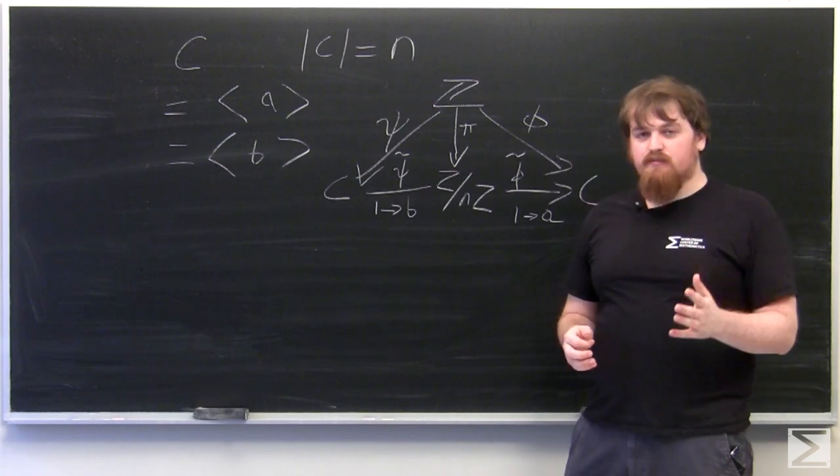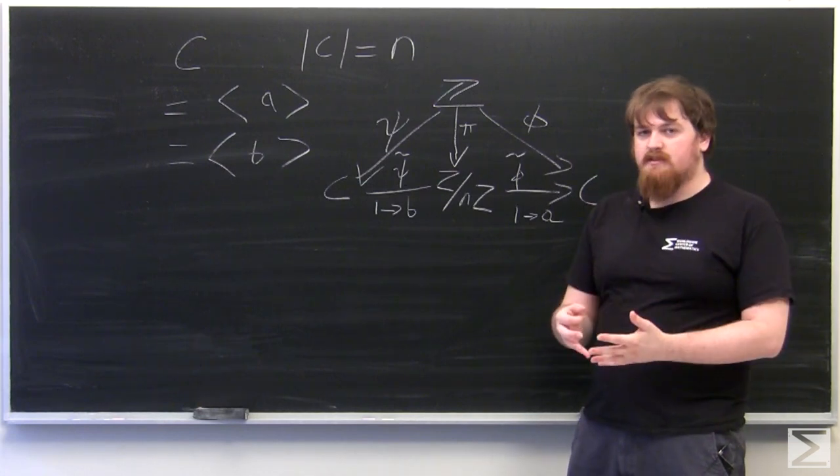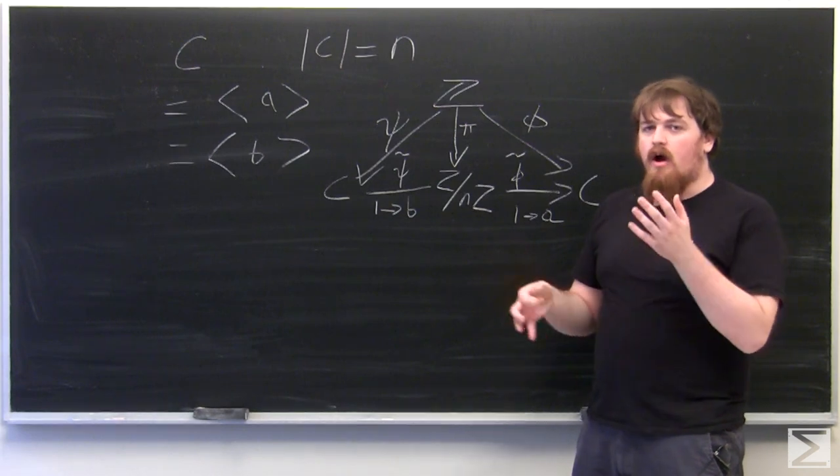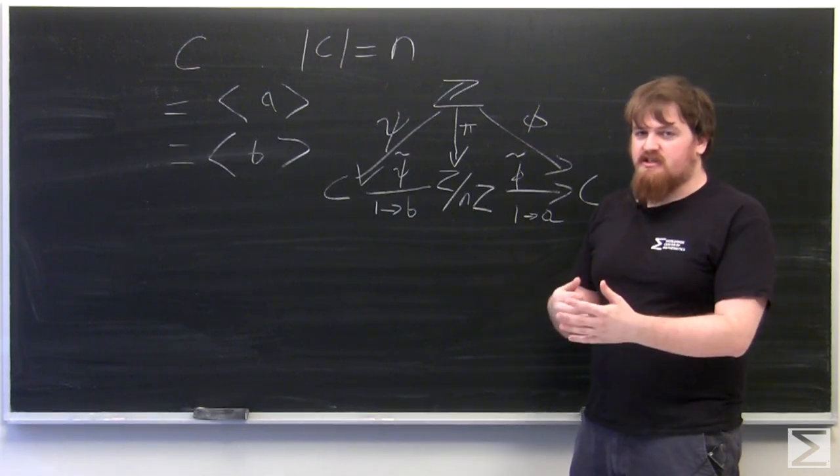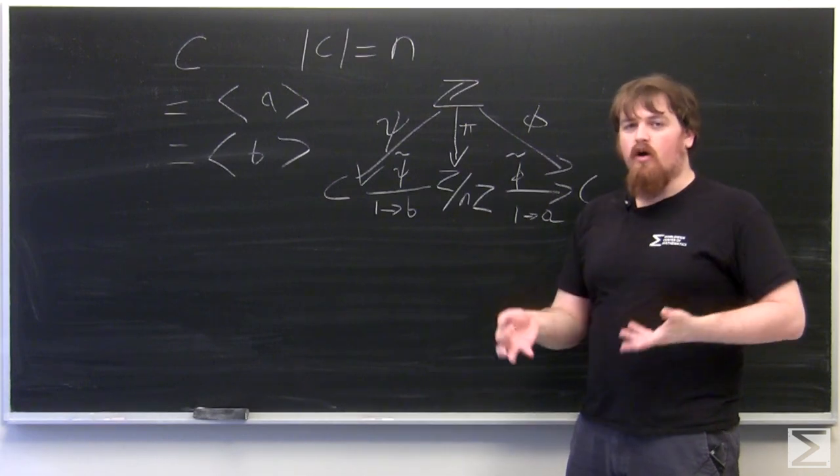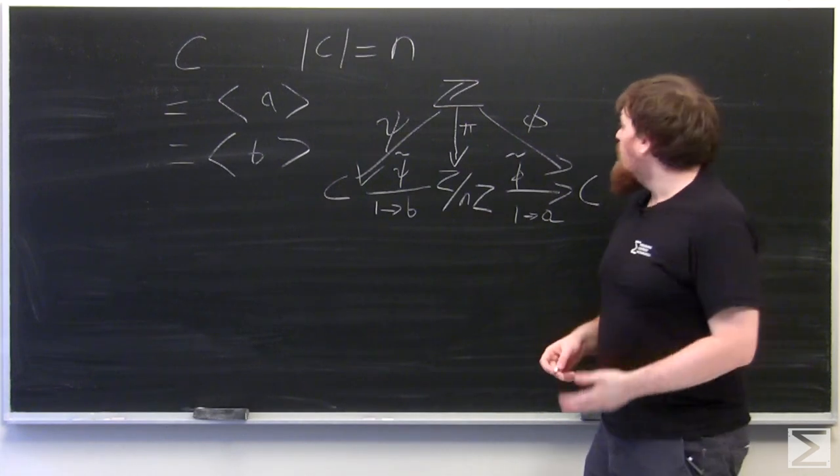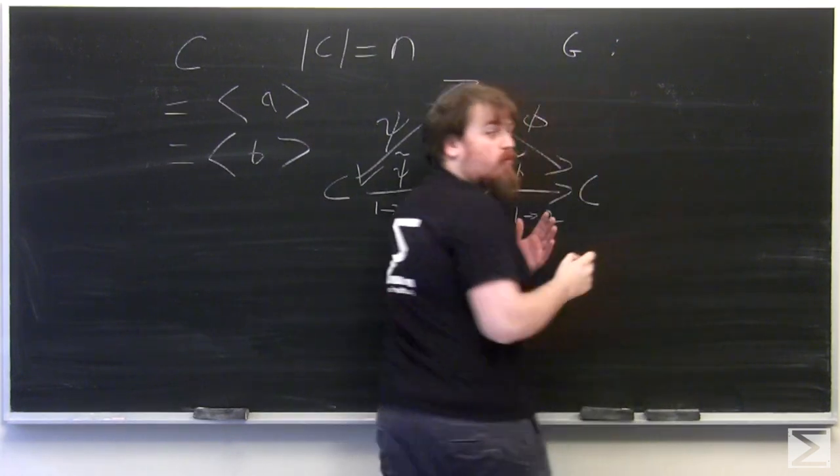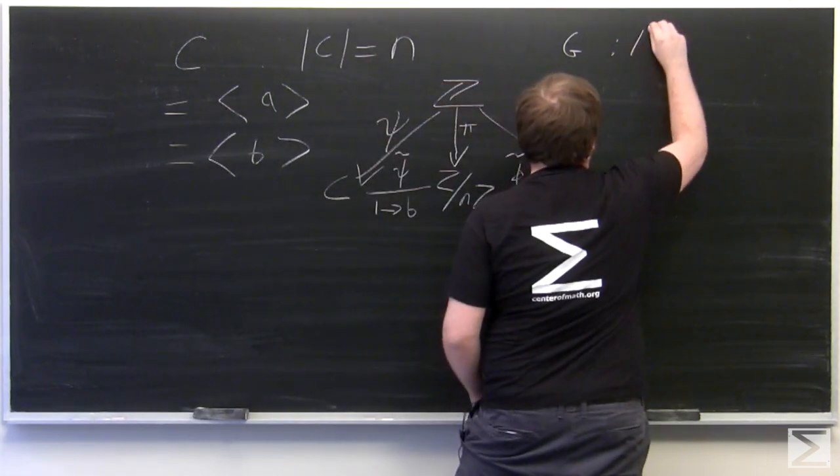It becomes useful at this point to note that the automorphisms of any group form a group themselves, in that they are associative in composition and they're invertible, and the composition of two automorphisms is another automorphism. For a group G, the group of automorphisms of G is written as Aut G.